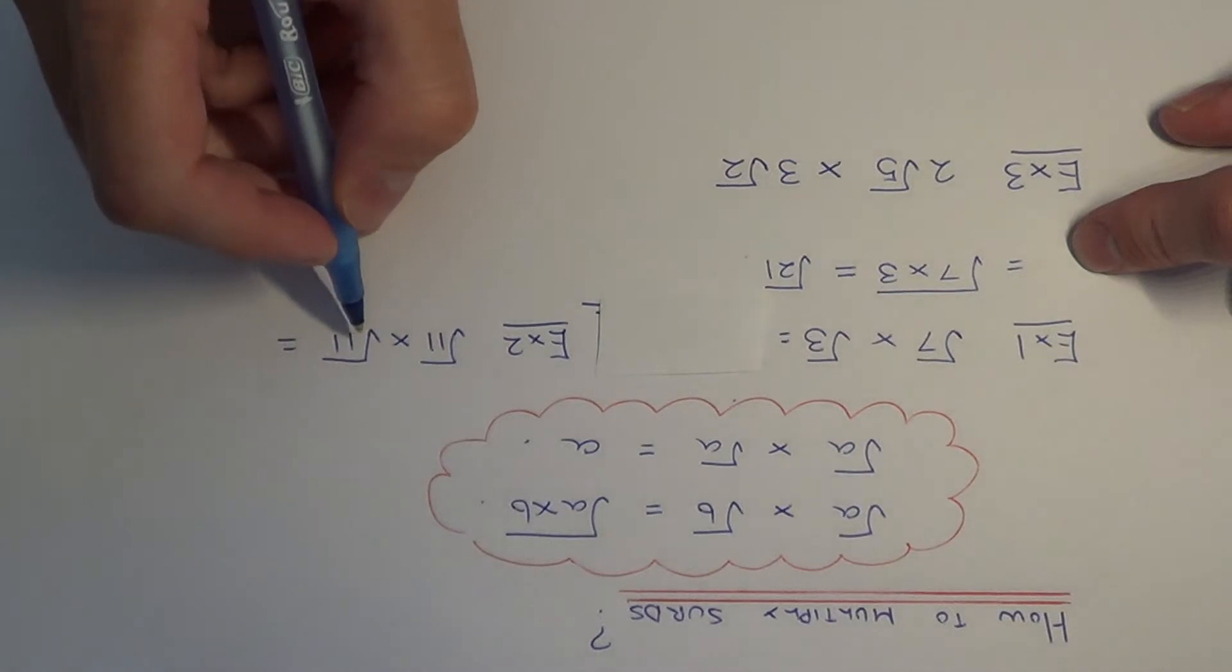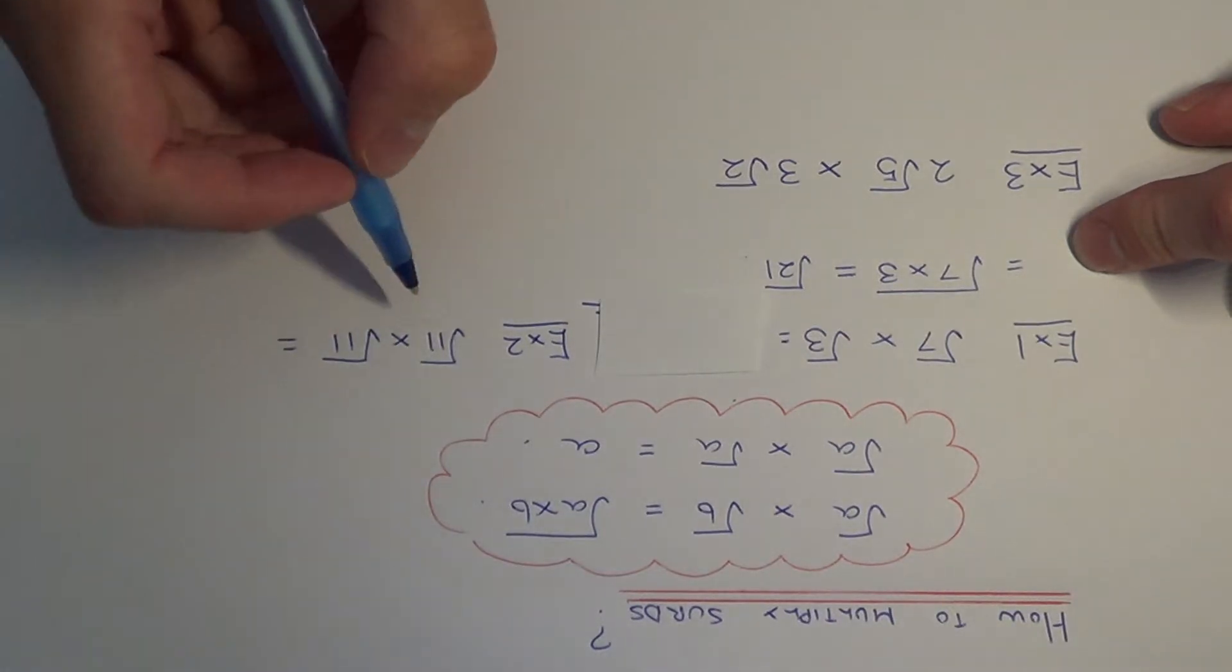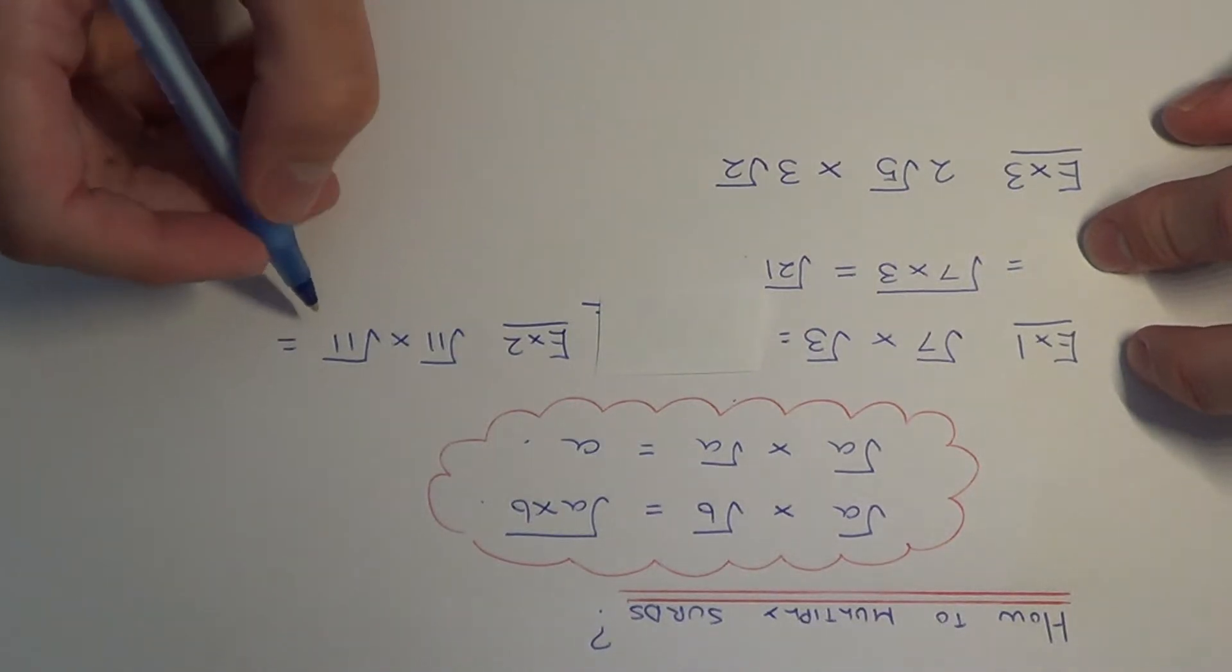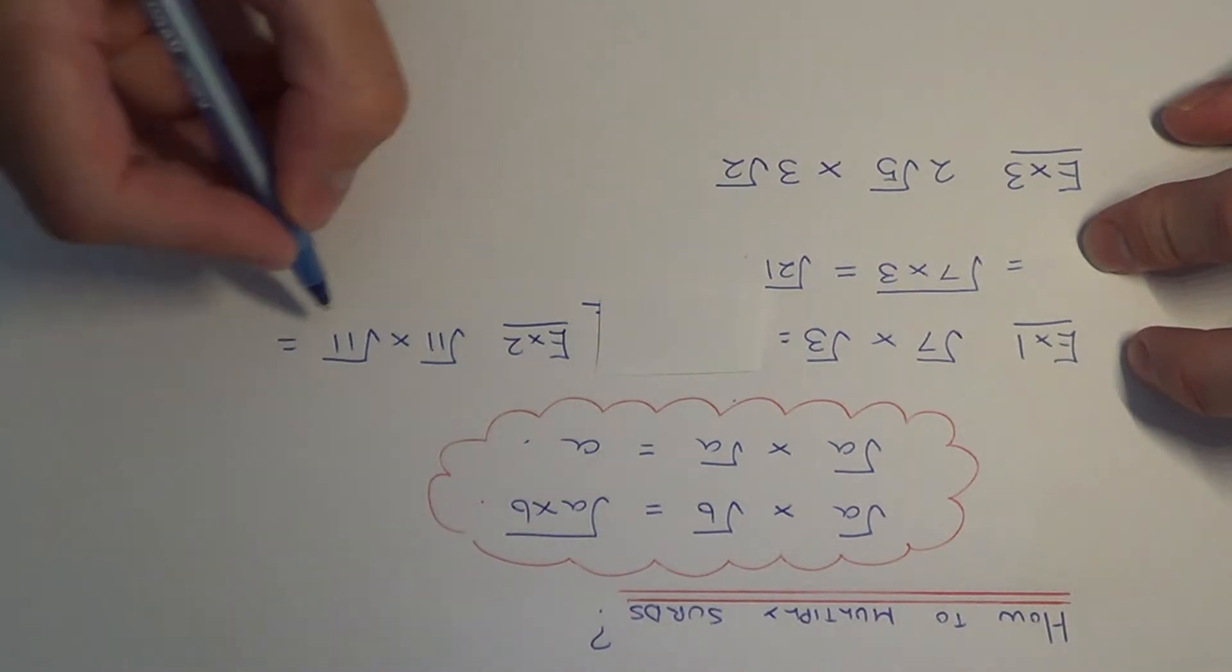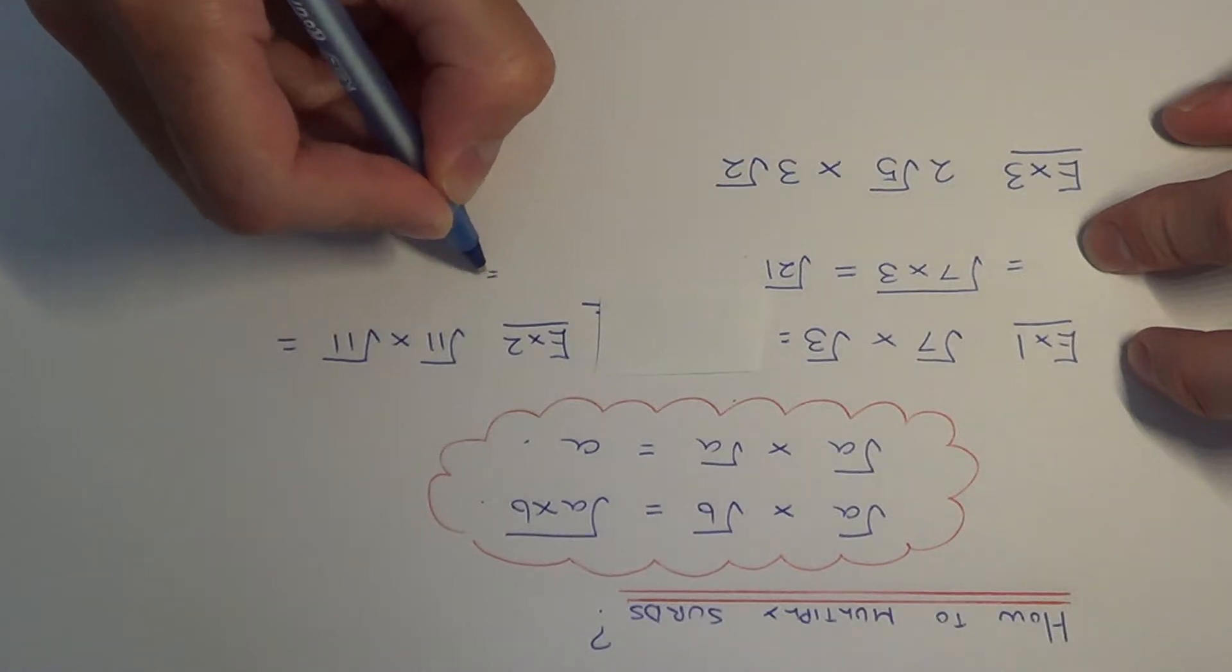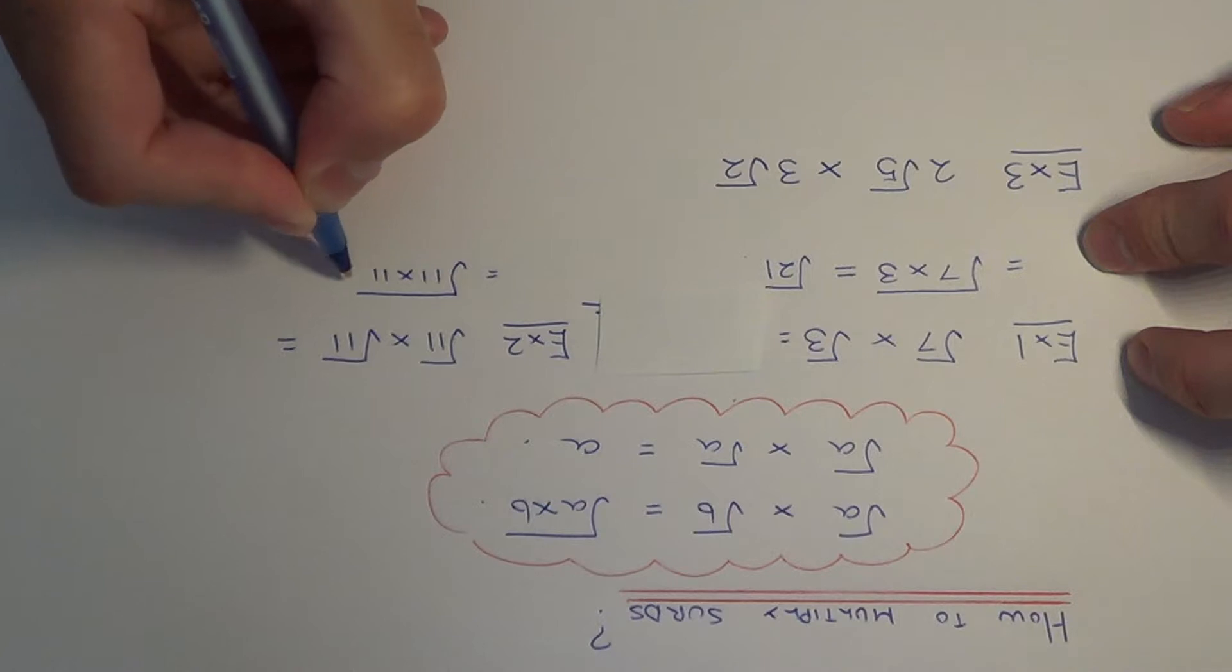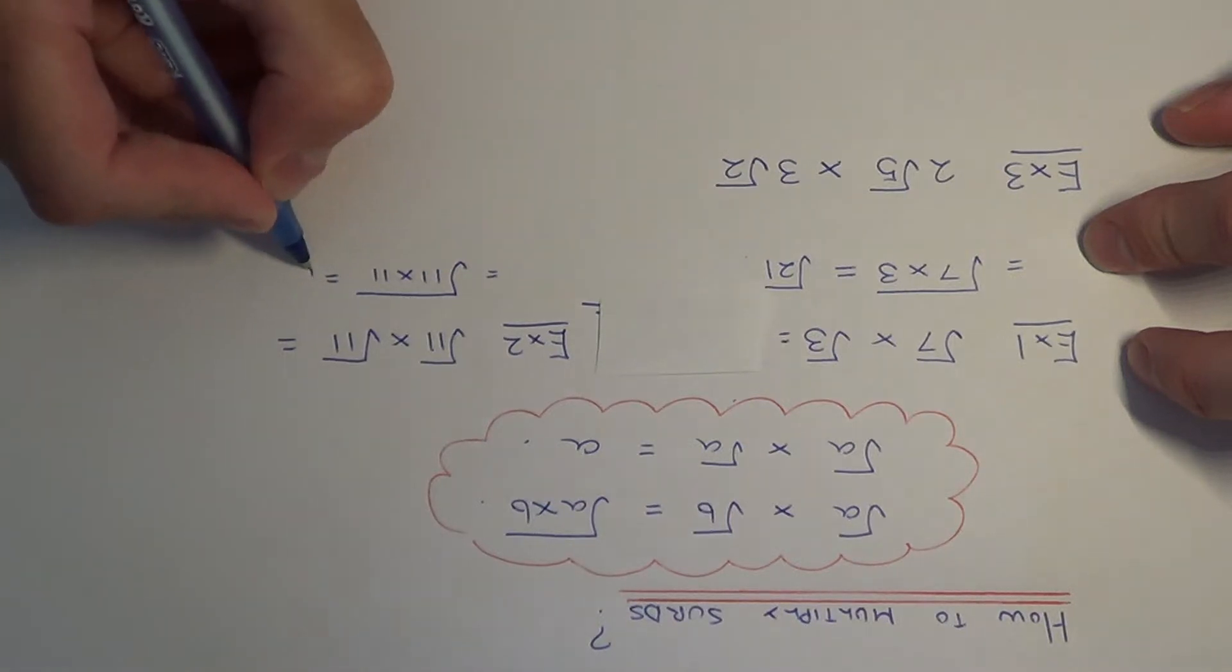Let's move on to example two. This time we have root eleven times root eleven. Again, we just need to multiply the numbers underneath the square roots together. Eleven times eleven is one hundred and twenty-one, so we end up with root one hundred and twenty-one.